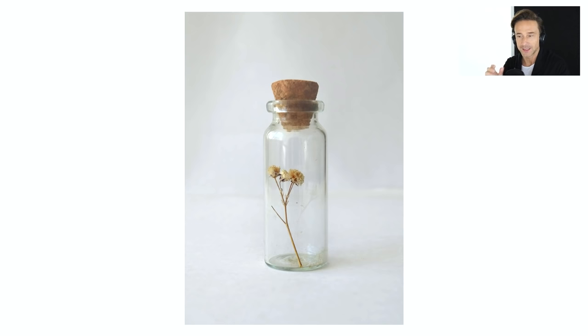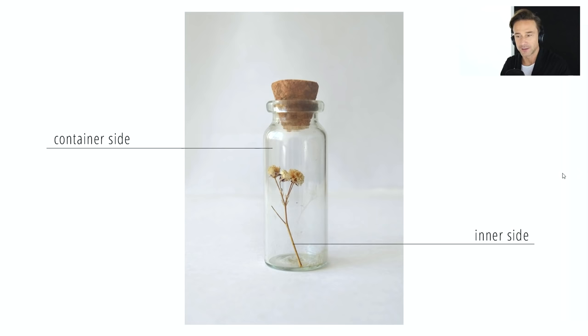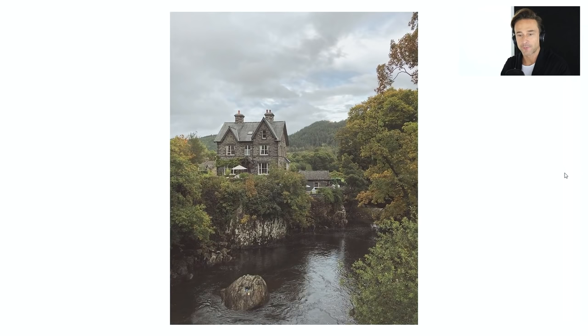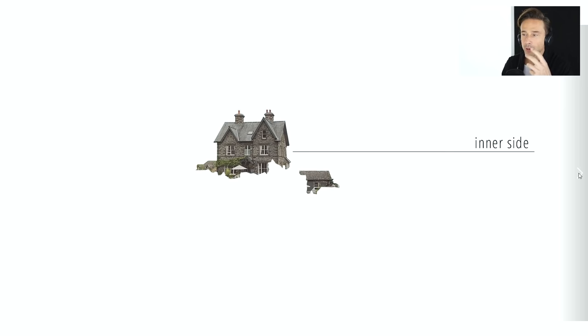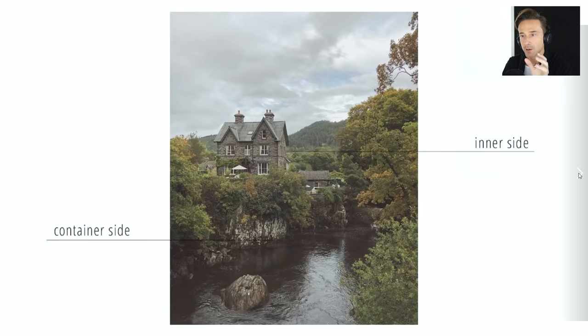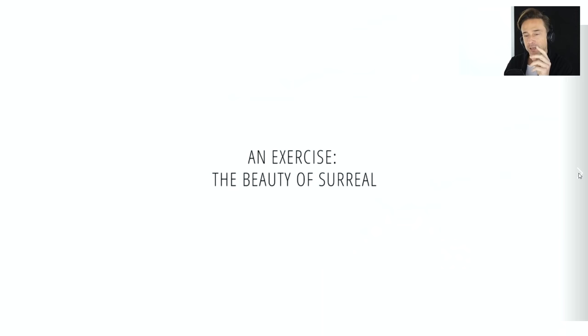I decided to explain to my students that a project is like this picture — it is composed by a container side and by an inner side, and you have to pay attention in modeling and rendering both sides. Firstly, we need to create, model and render the container side — in this case the surrounding — and in a separate file we will model and render the inner side, the architecture. This way our work can be faster and more accurate. Once we make the two separate sides, we put them together and start to shoot like a photographer.